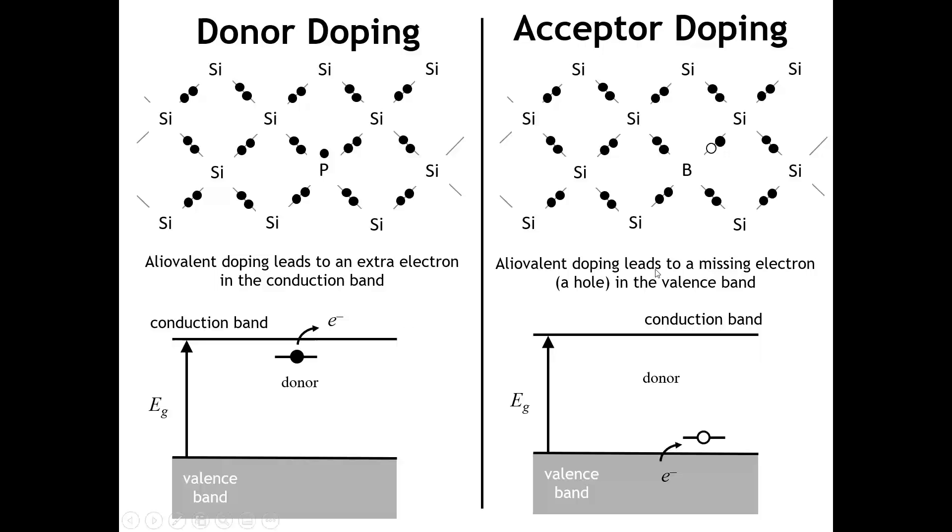The other way that you can dope a semiconductor is called acceptor doping. And in that, we are going to do alleovalent substitution with an element that has one fewer valence electron than the host structure, like silicon. So boron is a classic acceptor dopant. And in this picture now, electrons from elsewhere can drop in and fill up that missing electron, that hole, to create the localized bond here.